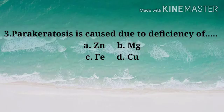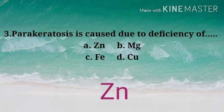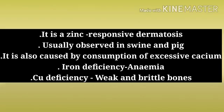Question: Parakeratosis is caused due to deficiency of — Options: A) Zinc, B) Magnesium, C) Iron, D) Copper. Correct answer: Option A — Zinc. Parakeratosis is caused due to deficiency of zinc. It is a zinc-responsive dermatosis observed in swine and pigs.